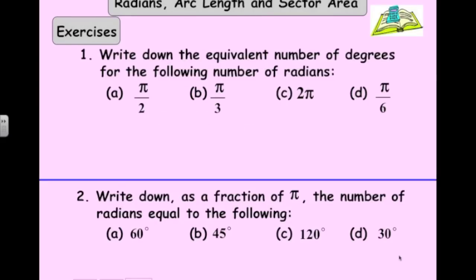So we can get conversions from that. So pi over 2. If pi radians is 180 degrees, pi over 2 would be 90 degrees. Pi over 3, 180 divided by 3, 60. 2 pi is 360. Pi over 6 is 30 degrees.